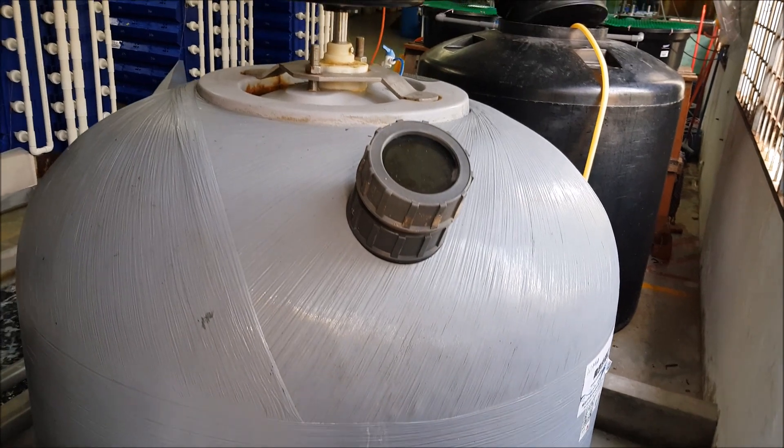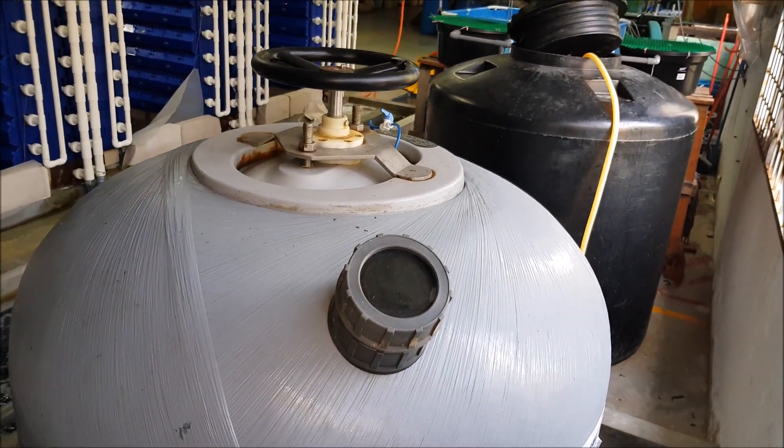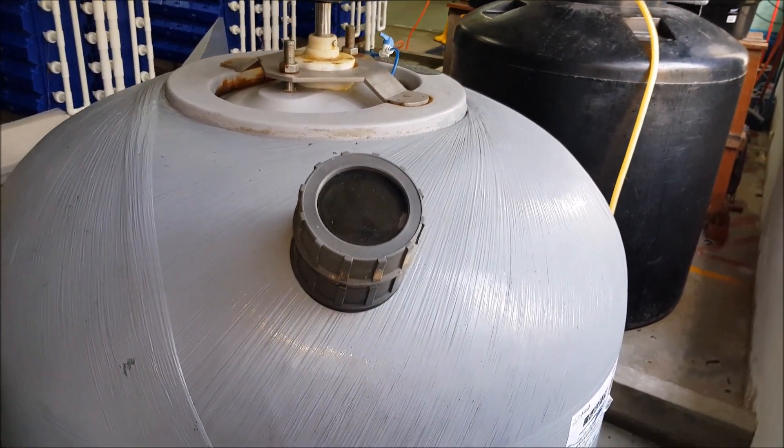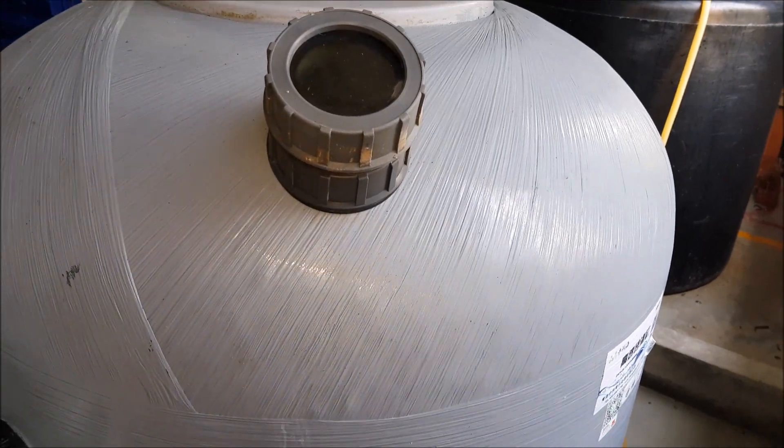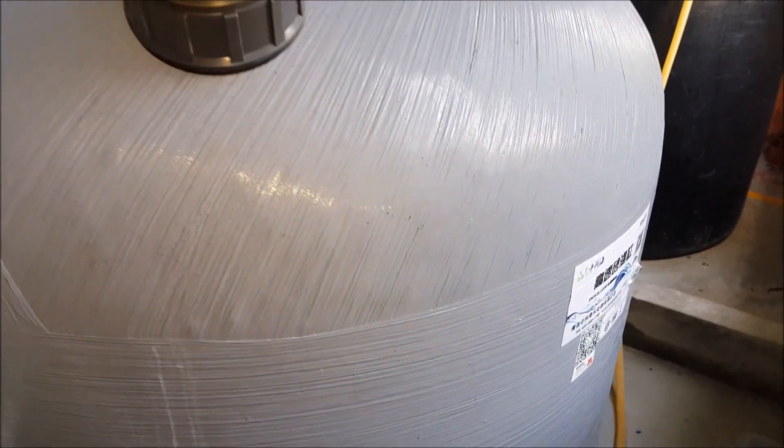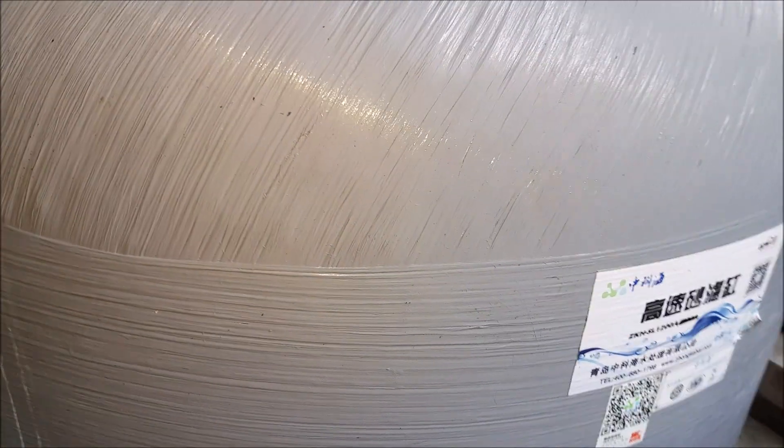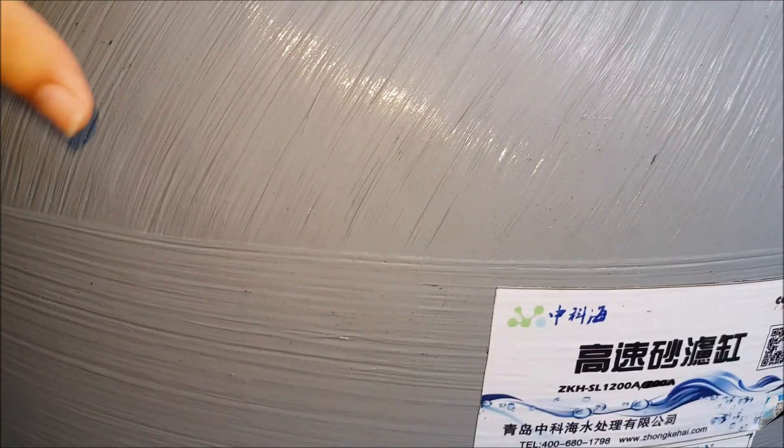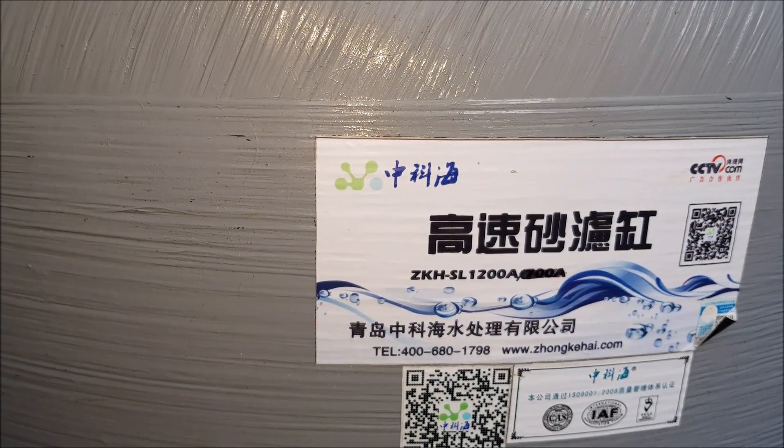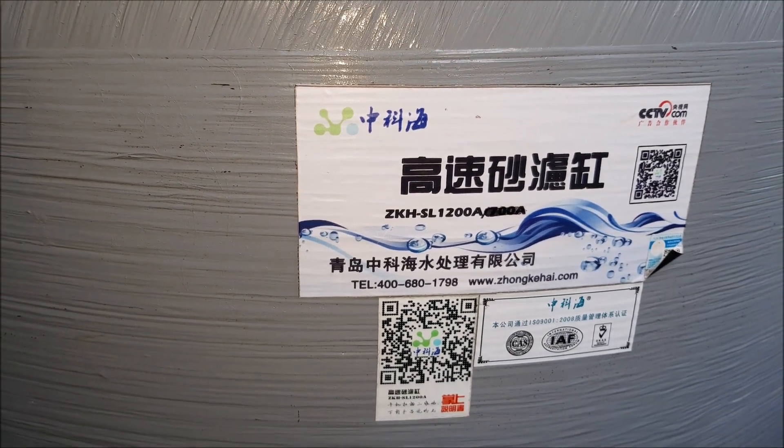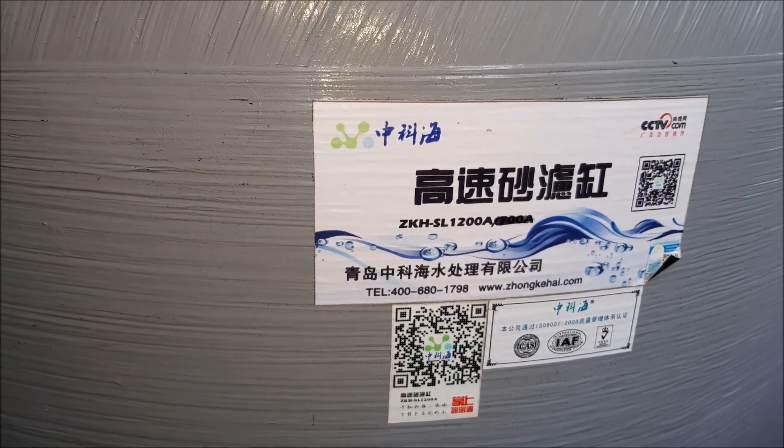This is an extra point to take note of. We'll next cover what are the major components. As you can see, this is the model number that we are actually using in our farm for 1000 crabs. It came, as we mentioned earlier, as part of the whole system, not inclusive of the sand.